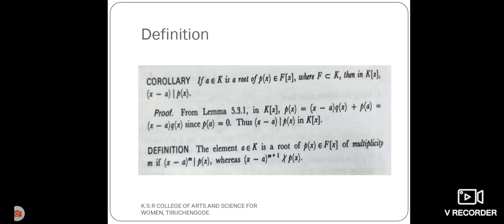Next, the definition: the element a belongs to K is a root of polynomial p of x belongs to f of x of multiplicity m if x minus a power m divides the polynomial p of x, where x minus a power m plus 1 does not divide the polynomial p of x.